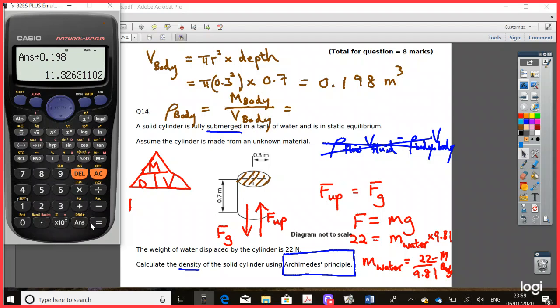And so that comes to 11.33. Remember the density is kg per meter cubed. And that's rounded to 2 decimal places.